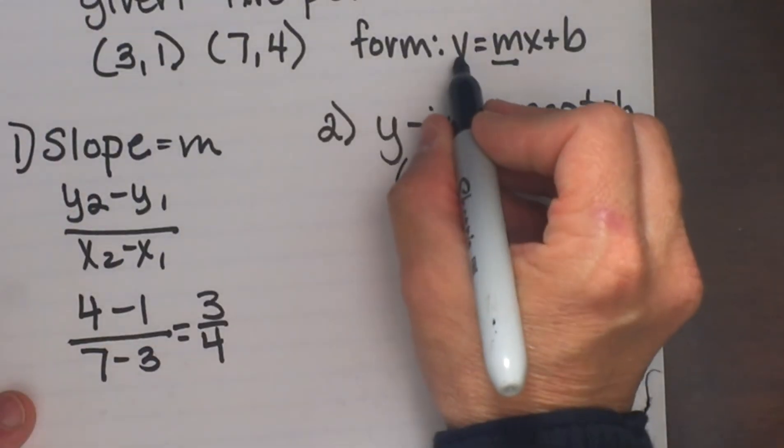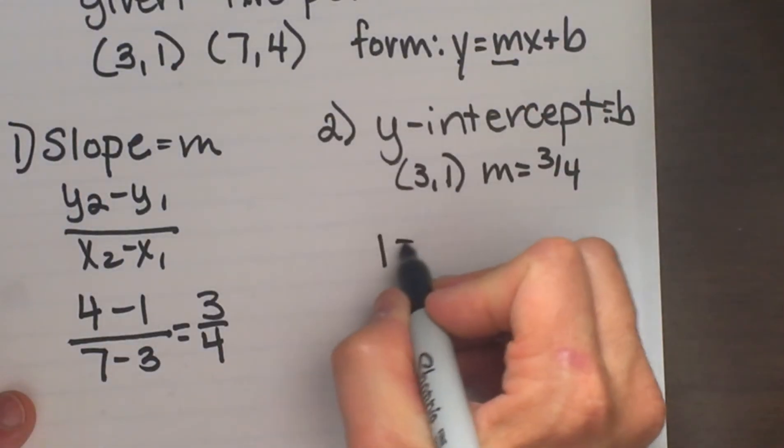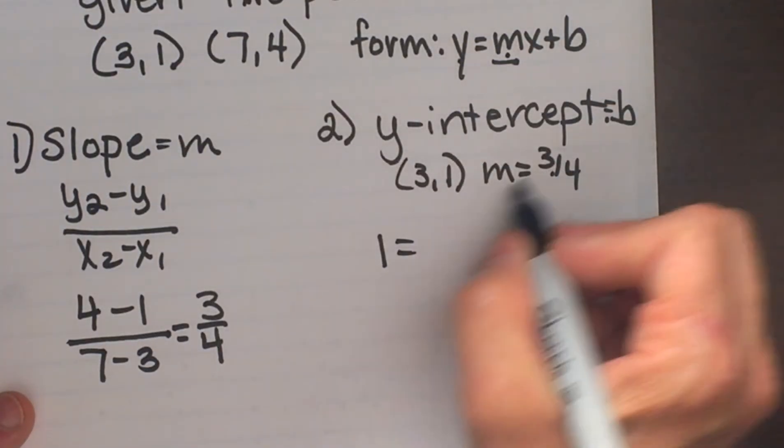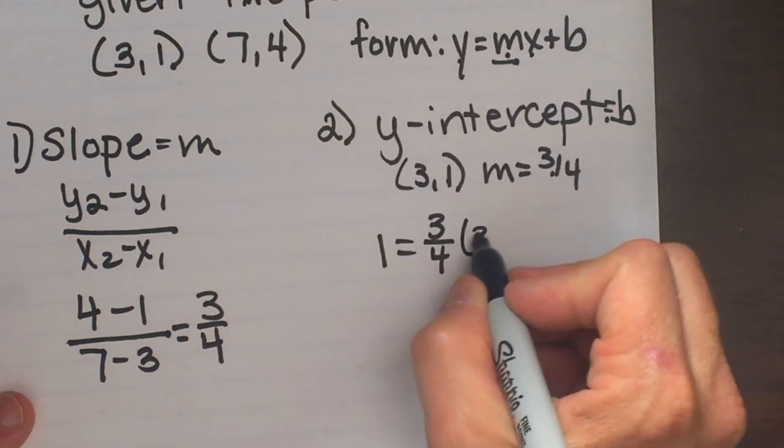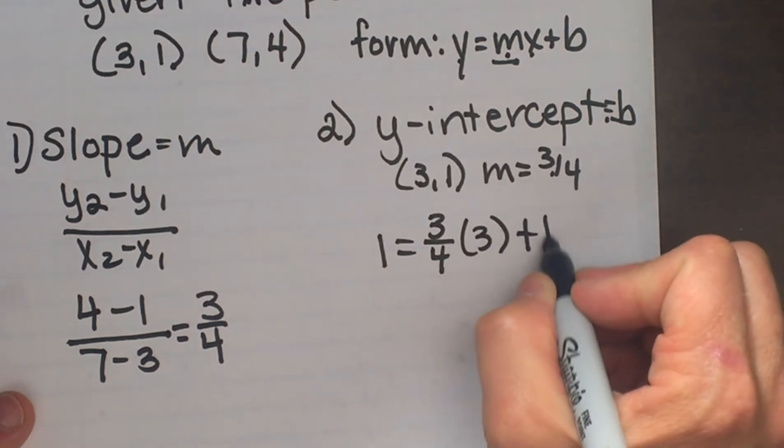And so I'm going to plug in: for y I'm going to plug in a 1, for m, that's the slope I just found, I'm going to plug in 3/4, and for x I'm going to plug in positive 3, and I'm going to solve for b.